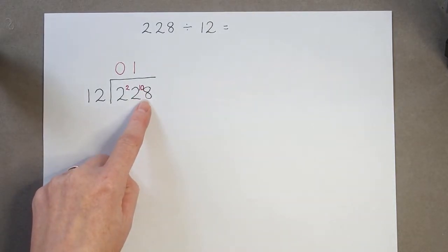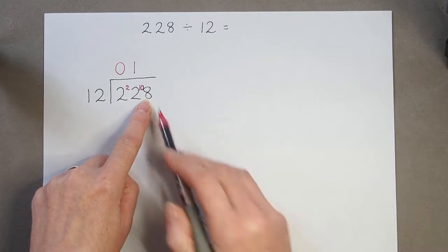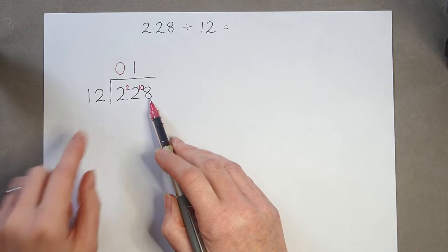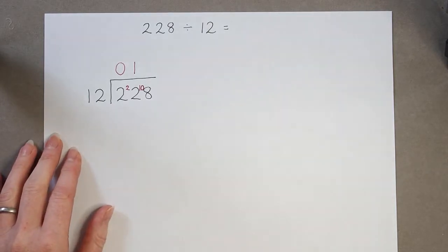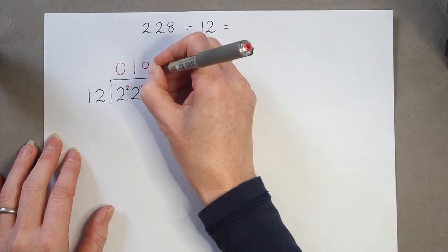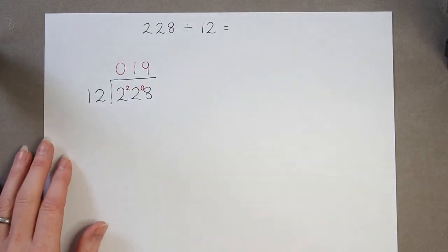So now my final calculation is 108 divided by 12. Because I know my 12 times table, I know that that is 9. So I can see my answer is 19.